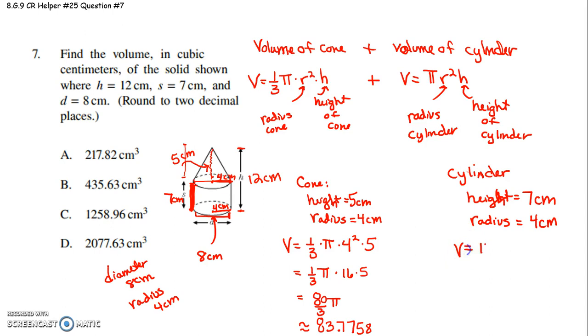So, the volume of our cylinder is pi r squared h. So, that's pi times the radius is 4 squared. The height of this is 7. The height of our cylinder is 7. So, that's pi times 16 times 7. And 16 times 7 is 112. So, that's 112 times pi. And so, if I take 112 times pi on our calculator,